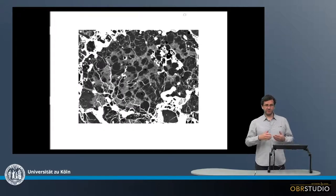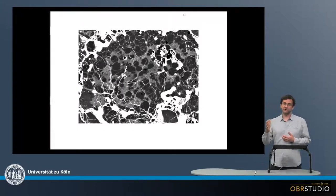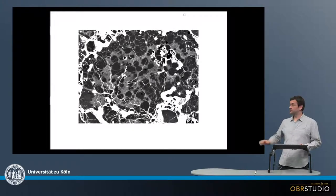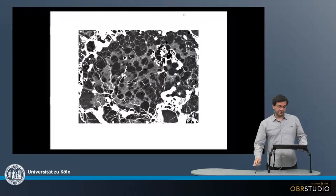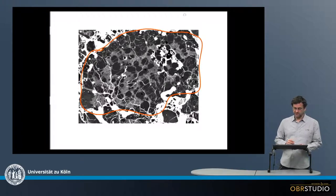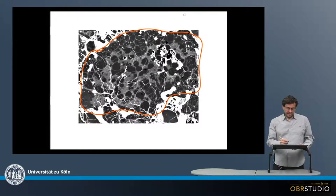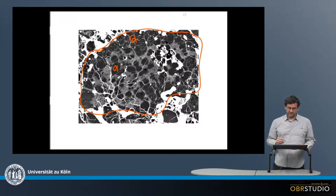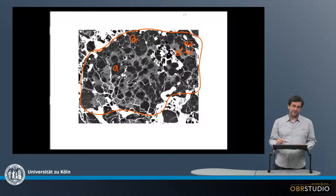Chondrules are tiny grains that are formed early in the protoplanetary disk during brief high-temperature events when the chondrules are molten and then quickly cooled and solidified. A chondrule is shown here in this image. The minerals in the chondrule are olivine, like here, and pyroxene here — these are large porphyritic grains — and also opaque phases like here, which might be metal or sulphide.